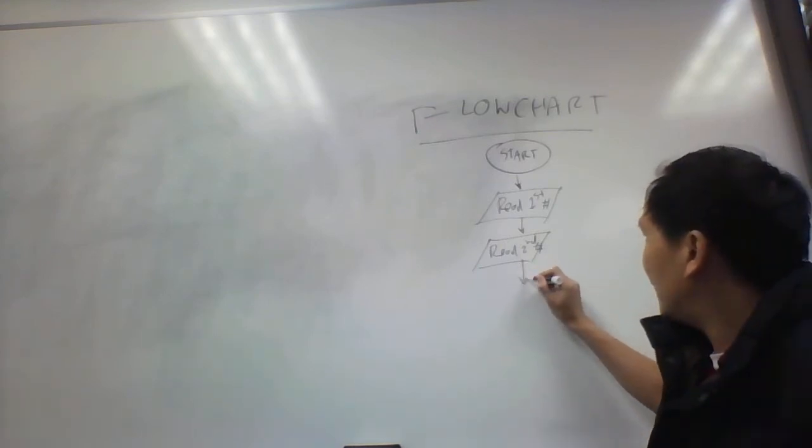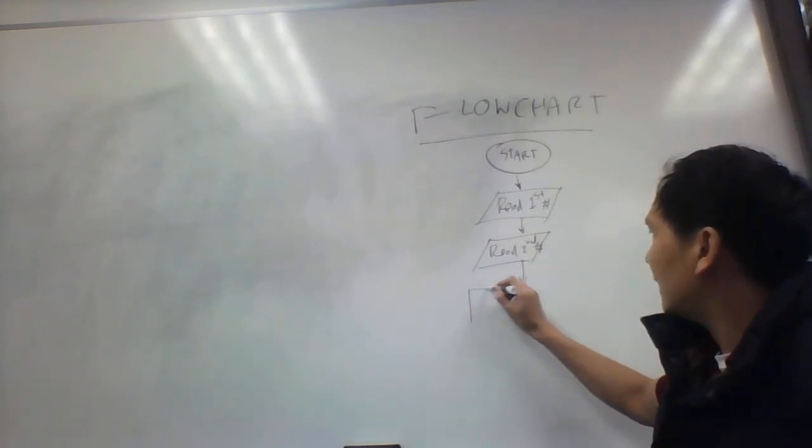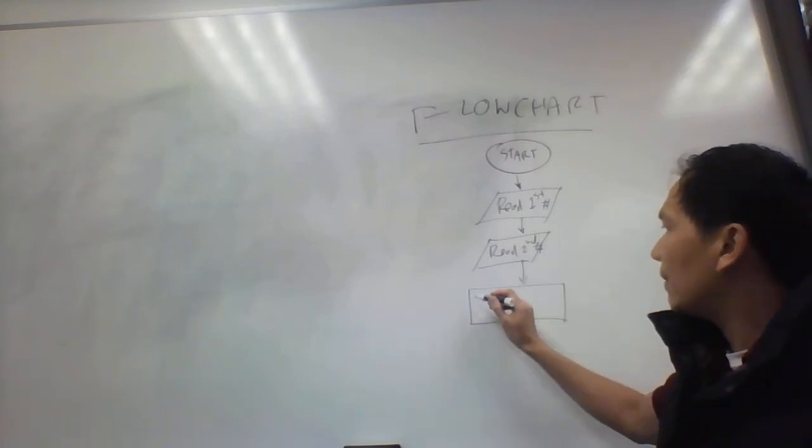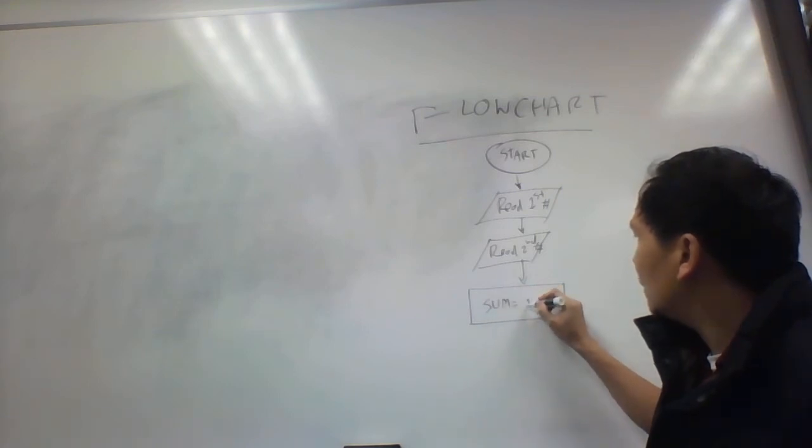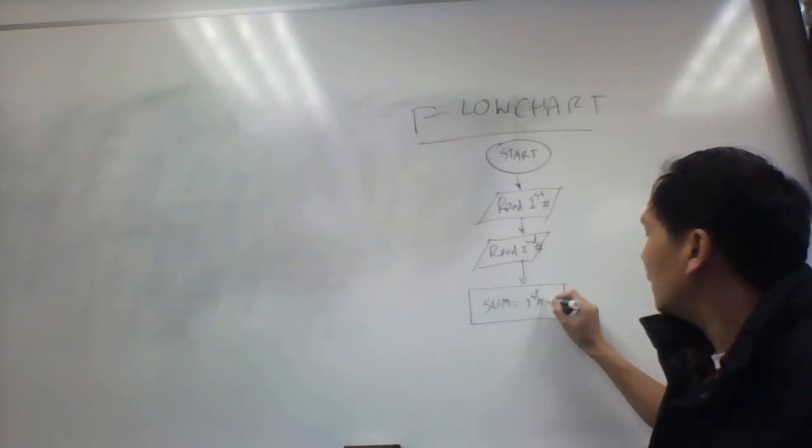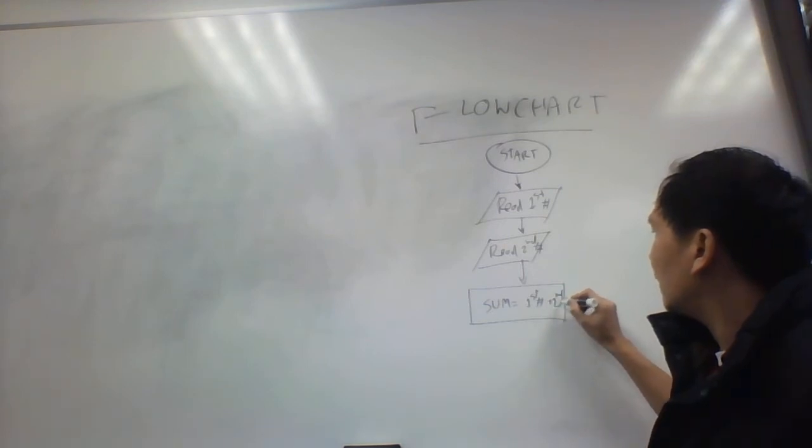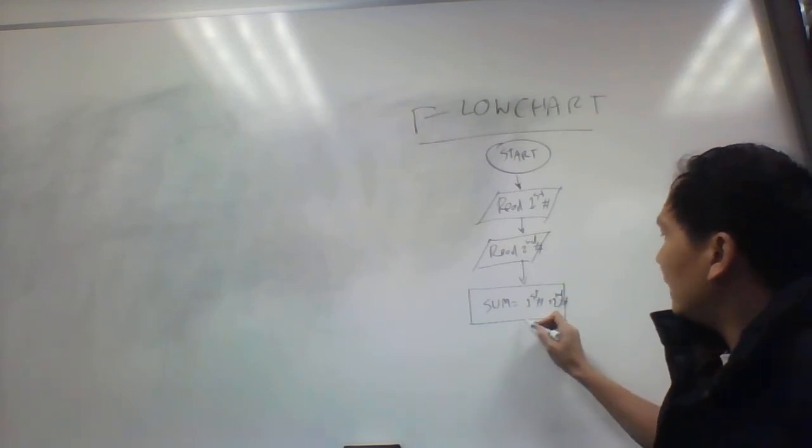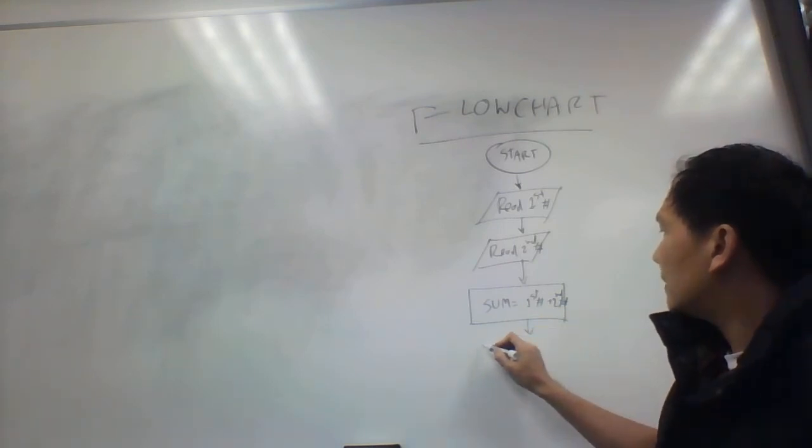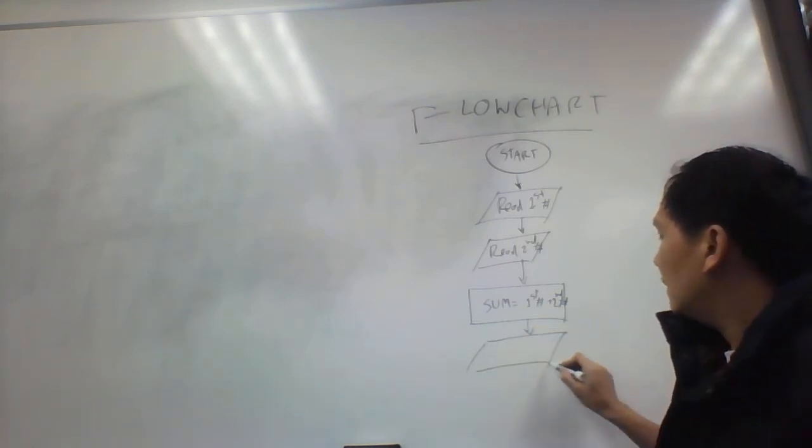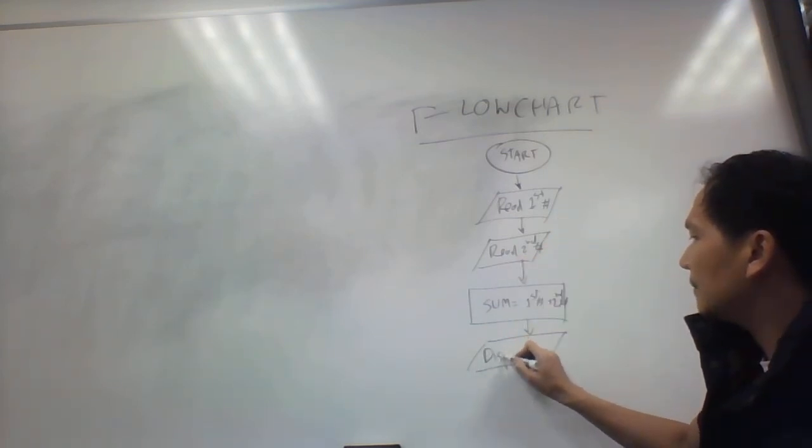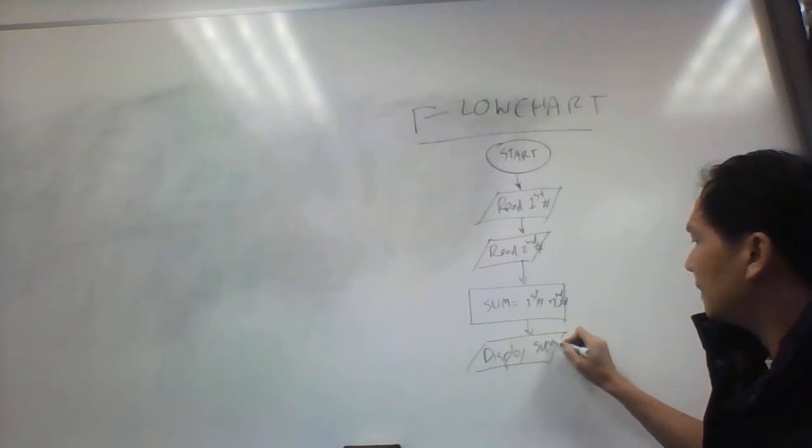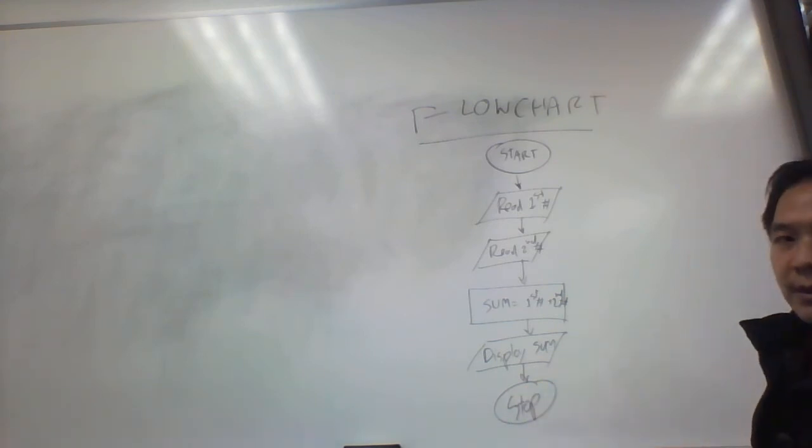The flowchart is going to have the arrow pointing down again, saying 'read second number.' After those two numbers have been read, we have to process that. To process, flowchart uses the diagram we call rectangle shape. This is going to be 'sum equals first number plus second number.' Once we get the sum, the application is going to display the sum. For display, we use the parallelogram again, so we say 'display sum,' and then the program stopped.